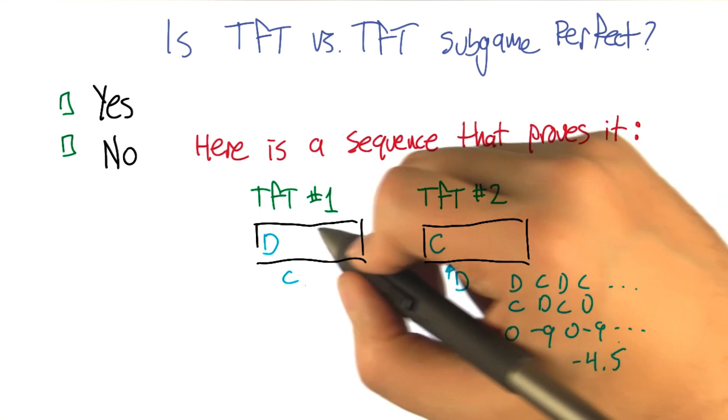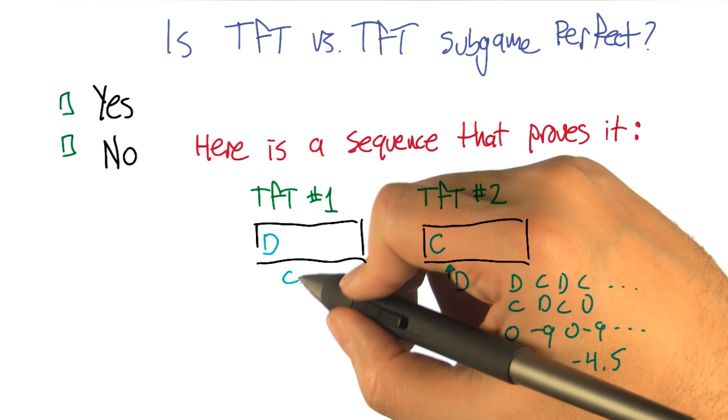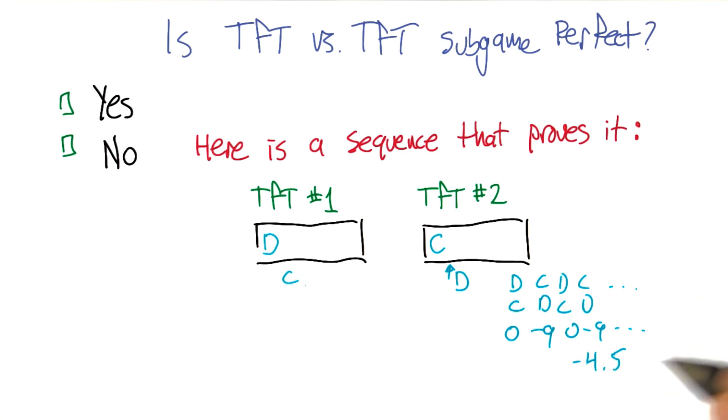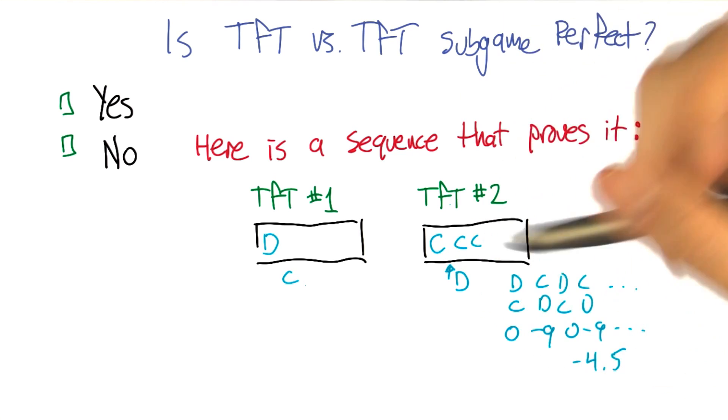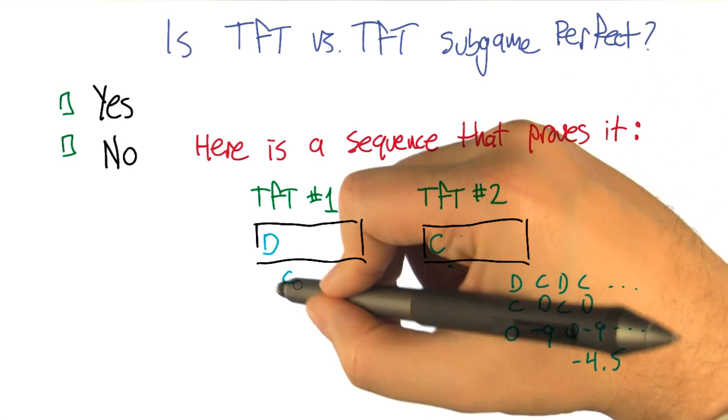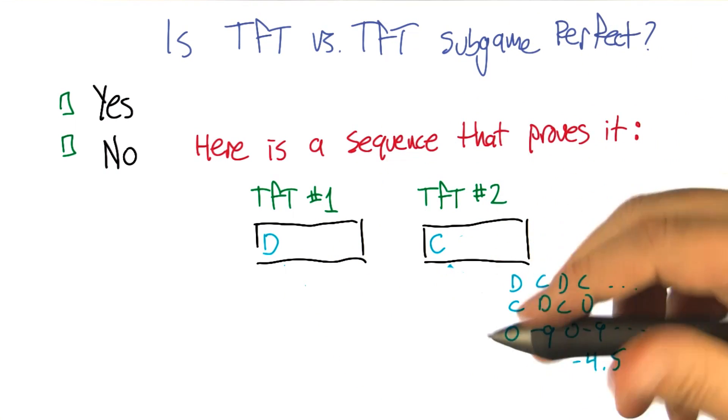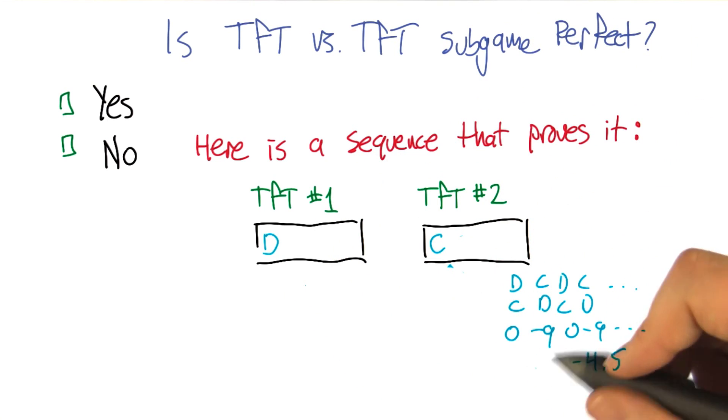Is there any way that it could behave against tit for tat, starting from this point, that would do better than negative 4.5? Just go ahead and cooperate. Just cooperate forever. Well cooperate the next time, and then keep doing tit for tat from that point on. It'll work out to be cooperate forever. On average, that's right, which will get us a minus 1.